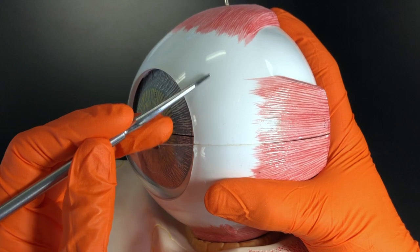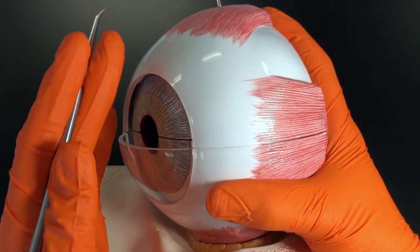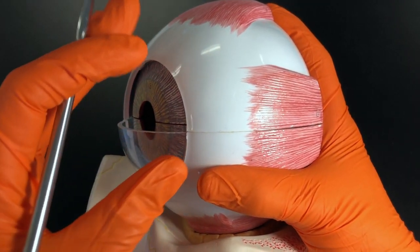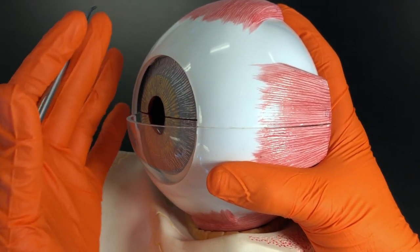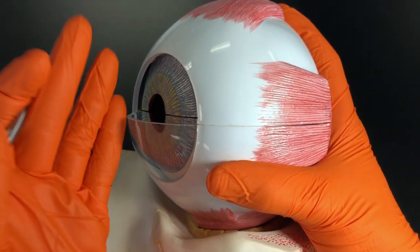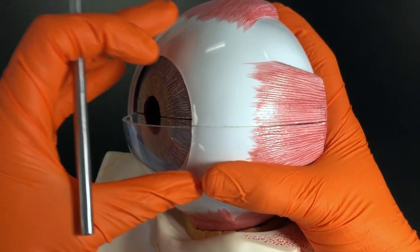The sclera is commonly known as the white of the eye, and it's made up of dense irregular connective tissue and is avascular. When we think form follows function, this is important because we want a tough connective tissue to keep the shape of the eyeball.